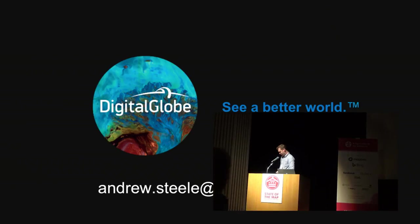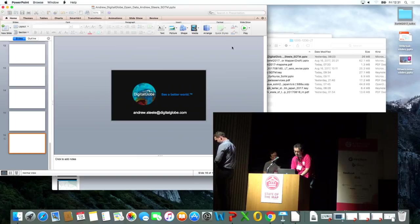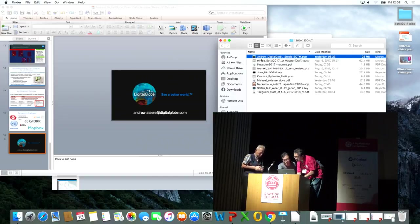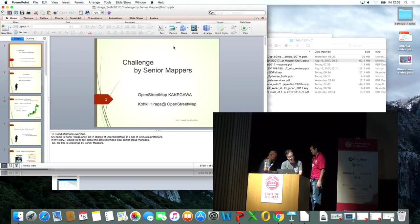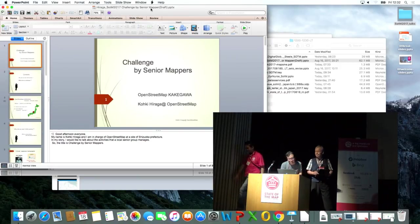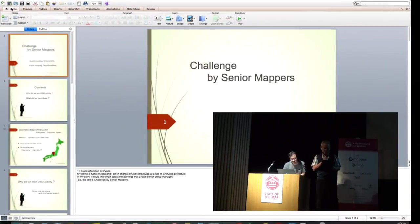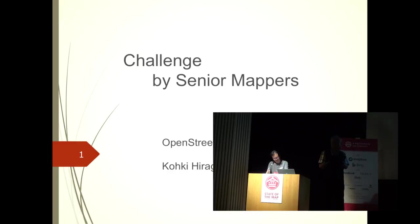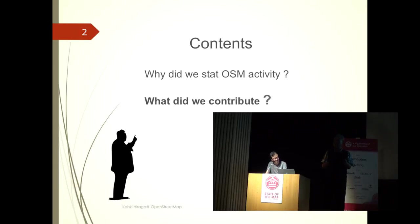The next presentation is by Koki Hiragasan, titled 'Senior Group Activity in Kakegawa, Japan.' Good afternoon everyone. My name is Koki Hiragasan and I am in charge of OpenStreetMap in Shizuoka Prefecture. I'd like to talk about the activity that a local senior group manages. The title is 'Challenge by Senior Mappers.'